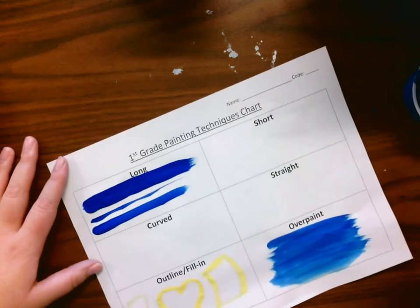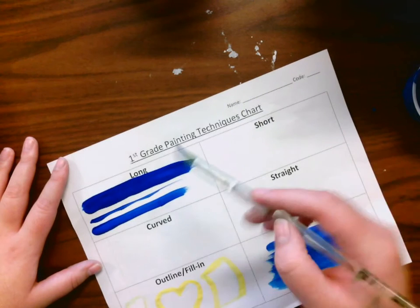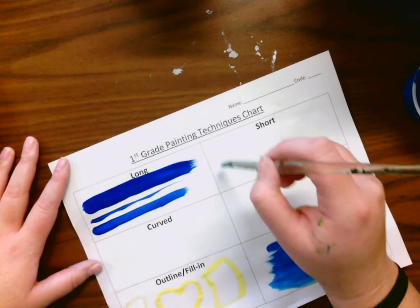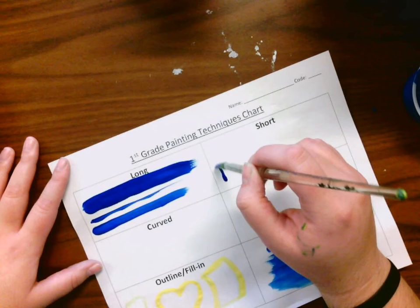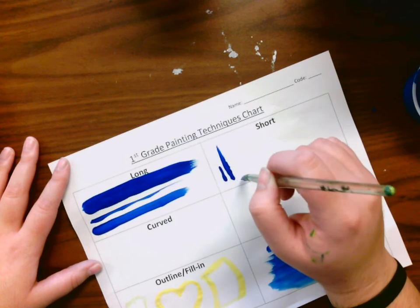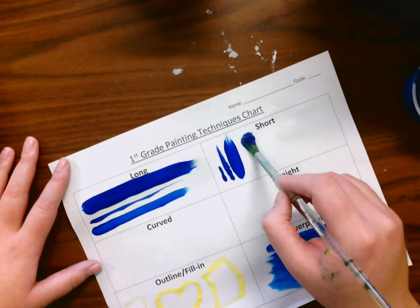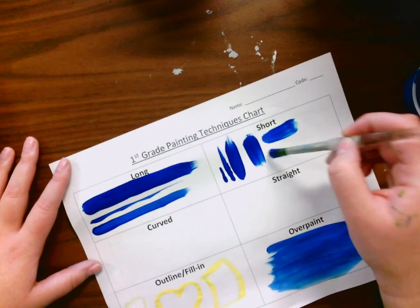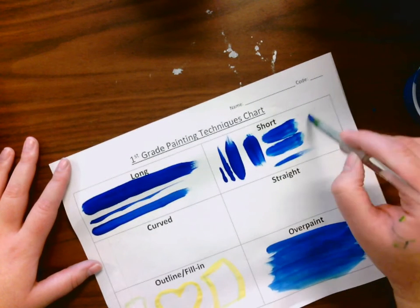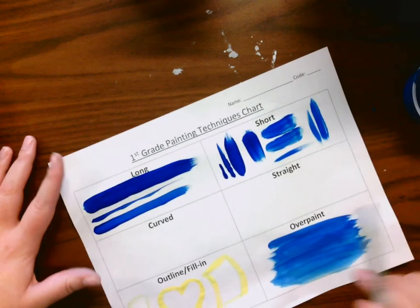Then we're going to practice short lines, and the long lines don't just have to be straight. And the short lines, we're going to practice making skinny, medium, and big short lines. They can go in different directions, whatever you want. All right, our short lines.